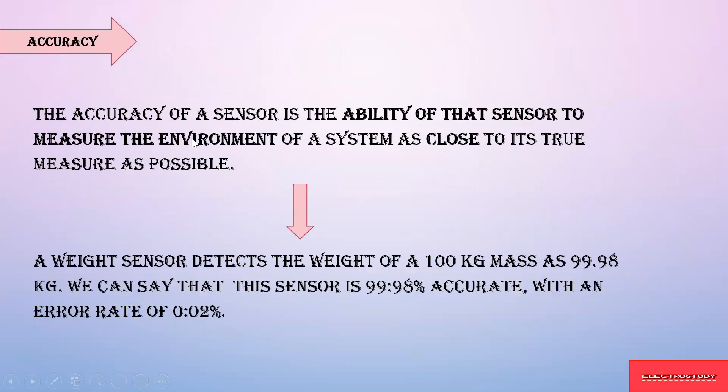Next is accuracy. Accuracy is the ability of the sensor to measure the environment in a way that is close to the true value. For example, if the actual room temperature is 30 degree Celsius and the temperature sensor measures 30.5 degree Celsius, it is very close — accuracy is nearly 100%. When the sensor reading is very close to the determined value, that is known as accuracy of the sensor.